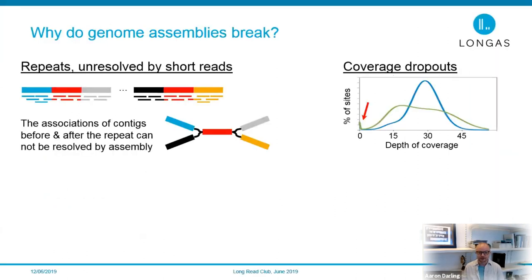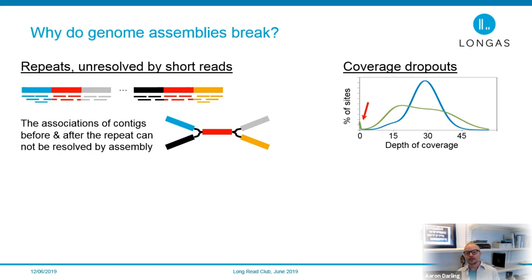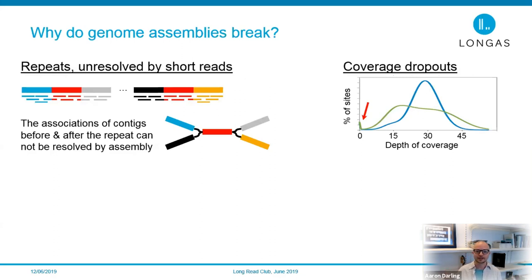The motivation for this technology is around genome assembly. There are a number of reasons why genome assemblies can break: one is that we simply didn't generate enough data for that part of the genome, so we have a coverage dropout. The other main reason, and this is very common, is that there are repeats in the genome and short reads by themselves are unable to resolve those repeats. When this happens, contigs on one side of the repeat go into the repeat and we do not know the association of contigs on the other side.